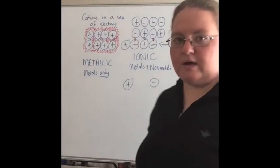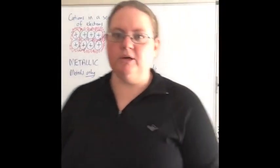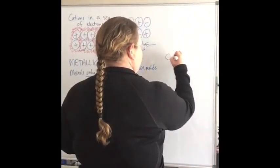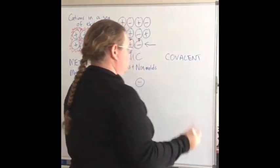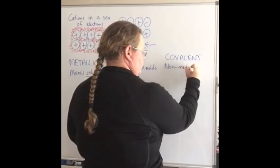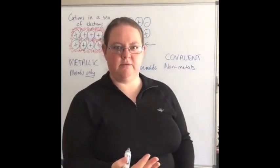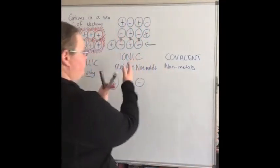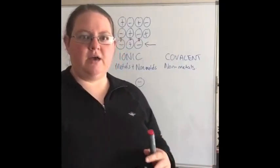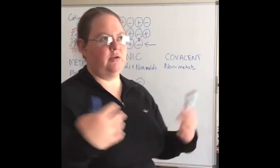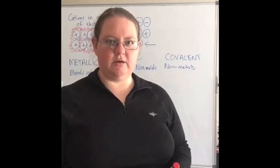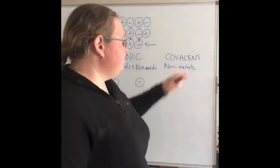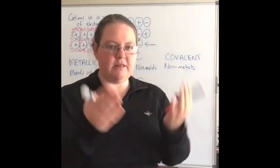Now covalent bonding. Covalent bonding is between non-metals only — all the elements on the right-hand side of the periodic table. Contrasting with ionic bonding, where you have the donating or stealing of electrons — metals donate electrons to non-metals to produce cations and anions — in covalent bonding, non-metal atoms share electrons in order to fill their outer shell.